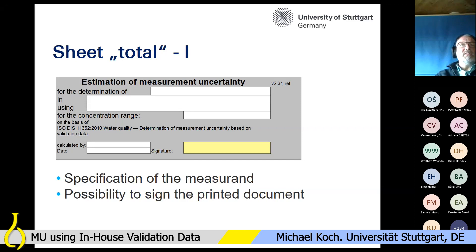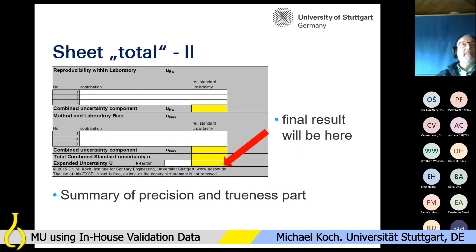The sheet 'Total' gives the specification of the measurement and, after finalizing everything, provides the possibility to sign the printed documents. In the lower part of the sheet, this is the result of reproducibility within the laboratory, and this part covers the bias. Here you will see the total combined standard uncertainty and finally the expanded uncertainty using the k factor that you can enter.